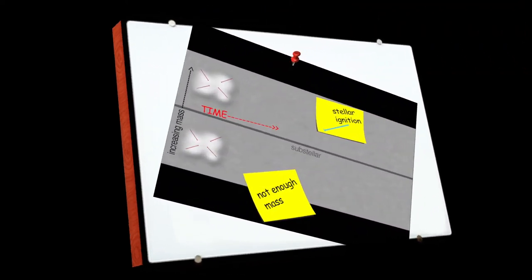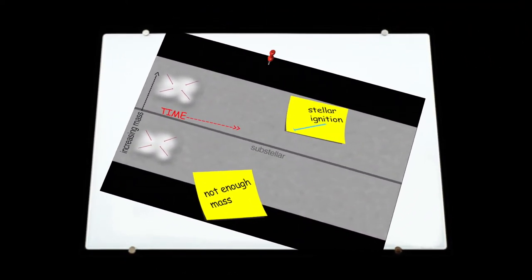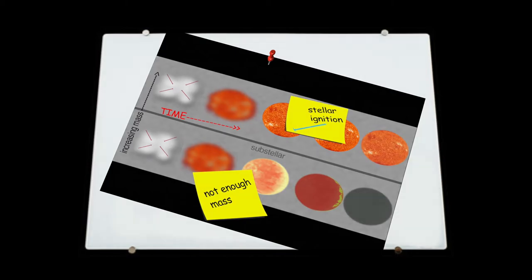The reason that WISE J0304-2705 undergoes such extensive evolutionary cooling is because it's substellar, meaning its interior never gets hot enough for hydrogen fusion, the process that's kept our sun hot for billions of years. And without an energy source maintaining a stable temperature, cooling and fading is inevitable.